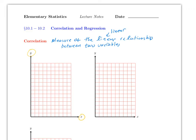There are three things that can happen. If the scatter plot shows y increasing as x increases, that is a positive correlation. Another way to think about it: as x increases, y increases too — that is positive correlation.